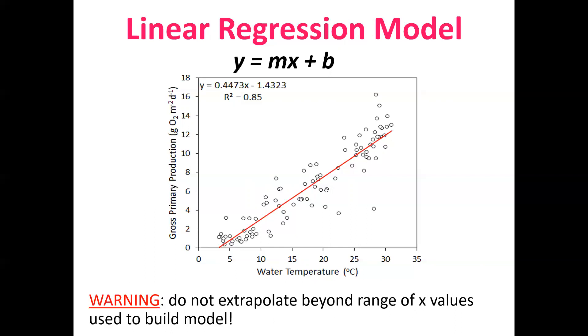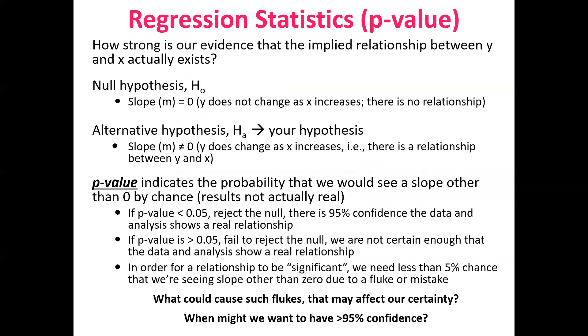However, a word of caution, whenever you're building a statistical model, you don't ever want to extrapolate beyond the range of x values that you use to build the model. And what I mean by that is, if you wanted to know what gross primary production was, say when water temperature is 50 degrees Celsius, you wouldn't want to use this model or it wouldn't be appropriate to use this model because we don't have, we didn't build it with any x values that were in that range. And what we don't know is that we don't know if this relationship holds for values outside of the range that we use to build the model with.